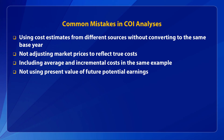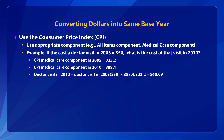To convert costs into the same base year, researchers commonly use the all-items component or the medical care component of the Consumer Price Index, found in the U.S. Statistical Abstract published by the U.S. Census. Here's an example where the cost of a physician visit in 2005 — $50 — needs to be converted to 2010 dollars. To do this, you look up the CPI rate in 2005, divide it by the rate in 2010, then multiply by the 2005 value to determine the corresponding 2010 value — in this case, $60.09.